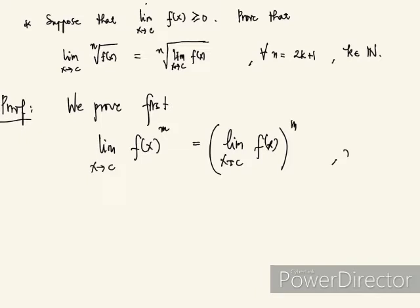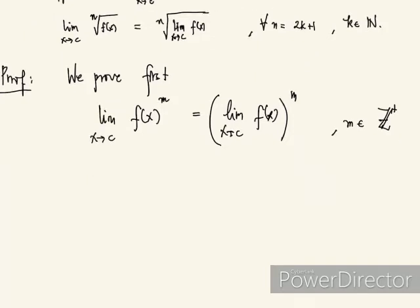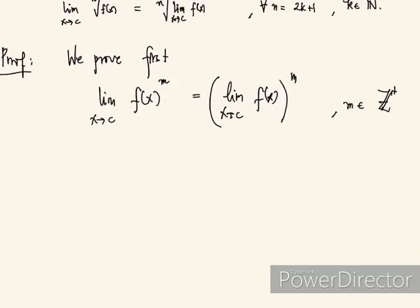For simplicity of notation, let K be equal to the limit of f(x) as x approaches c. So this becomes K to the m. Suppose m is 2 — so what happens when m equals 2?